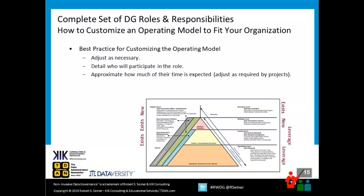Adjust the model as necessary. I had a client that took it and turned it into nine layers, and they spent a lot of time describing the difference between layer six and layer seven. I suggest looking at the levels I defined — executive, strategic, tactical, operational, and support — as they may already be used within your organization. Once you've identified the different roles, you need to say: who are the people that will participate, how much of their time, and what exactly are we going to ask them to do as we engage them in the data governance program?